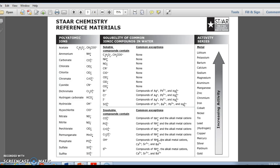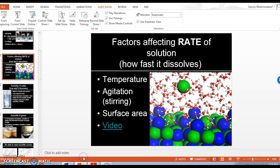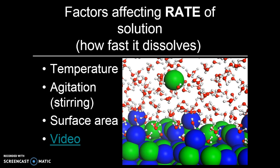Now we're going to turn our attention to not just whether or not it dissolves, but how fast it dissolves, and also how much dissolves. When we're talking about how fast it dissolves, we're really talking about rate of solution, and it has everything to do with the collisions of the particles involved. This slide tells you the factors affecting the rate of solution, or how fast something dissolves — the more the particles collide, the faster the soluble substance will dissolve in water.